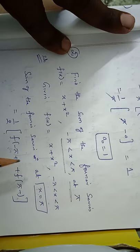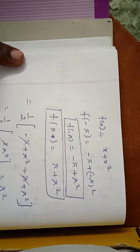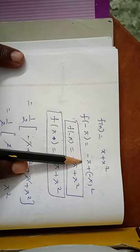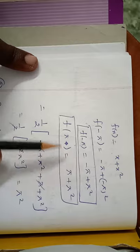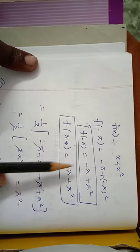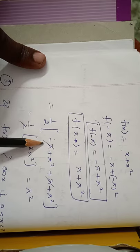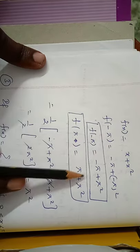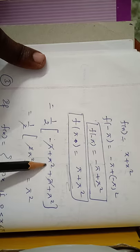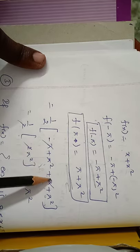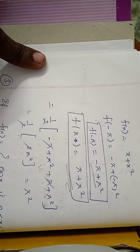Since f(x) = x + x², we apply: f(−π) = (−π) + (−π)² = −π + π², and f(π) = π + π². So the sum = (1/2)[f(−π) + f(π)] = (1/2)[(−π + π²) + (π + π²)] = (1/2)[2π²]. The +π and −π cancel, and the 2 cancels, giving the final answer π².